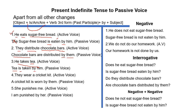'She punishes me۔' Present indefinite tense ہے، 'me' object ہے — subject میں آئے گا تو 'I' بن جائے گا، 'I' کے ساتھ 'am' آئے گا: 'I am punished by her۔' Negative میں: 'He does not eat sugar free bread' → 'does' ختم ہوگا، 'is not' آئے گا: 'Sugar free bread is not eaten by him۔' اسی طرح 'We do not do our homework' → 'Our homework is not done by us۔'